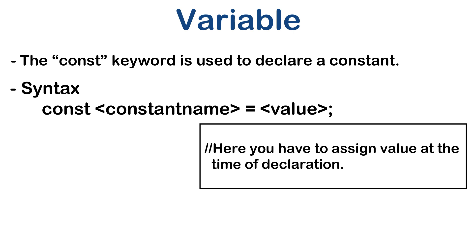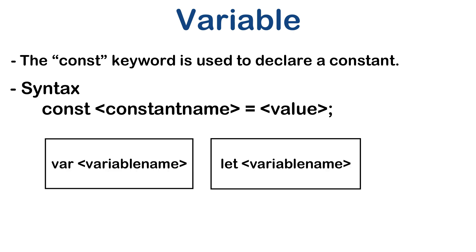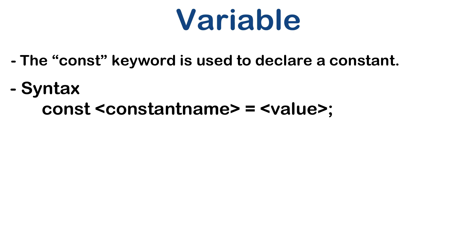If you compare the variable declaration syntax with const syntax, you will observe there is an equal-to sign — at the time of declaring a constant you have to assign a value, because it's a constant. A variable's value may change, but in the case of a constant you are not allowed to change the value once you declare it, so you have to assign the value at the time of declaration.